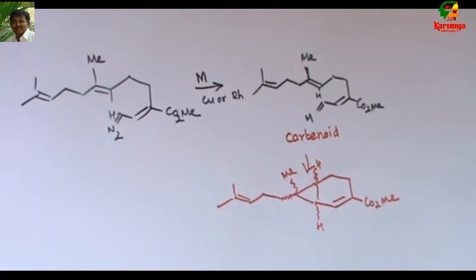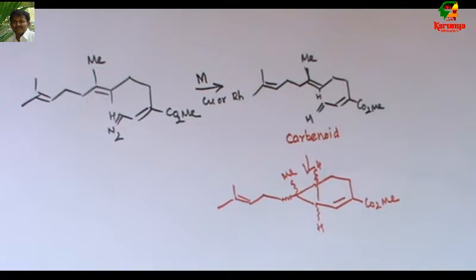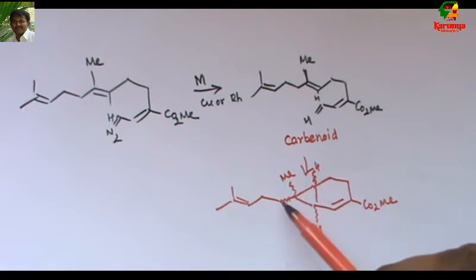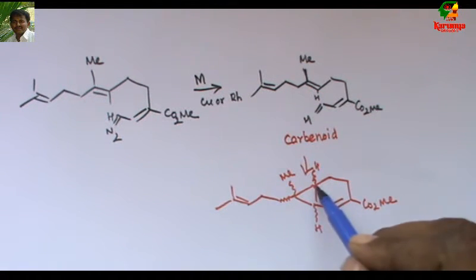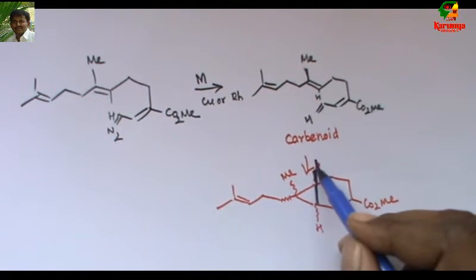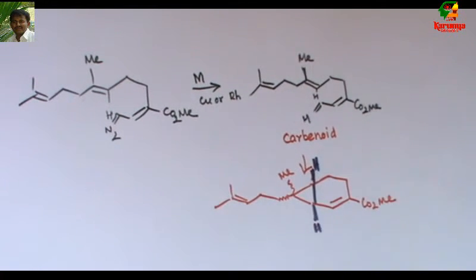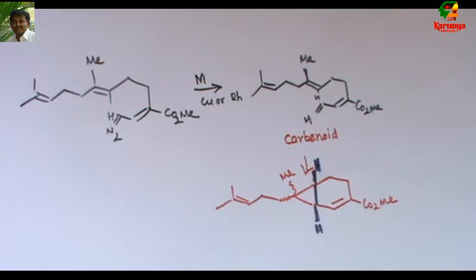Now we need to predict the stereochemistry of this methyl and hydrogen, the methyl and the side chain and the two hydrogens. You may know that you cannot connect a three-membered ring and a six-membered ring by trans stereochemistry. That means at the fused junction, the stereochemistry should always be cis.